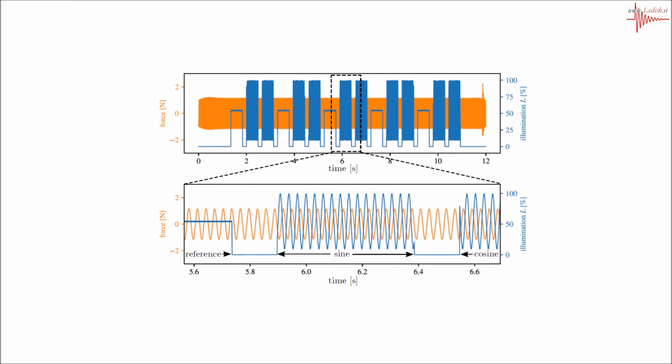From the graph above, five repetitions of the measurement are evident. Each repetition is comprised of three regimes. First, constant illumination, which produces a reference image, followed by sine and cosine phase illuminations for the imaginary and real spectral components.